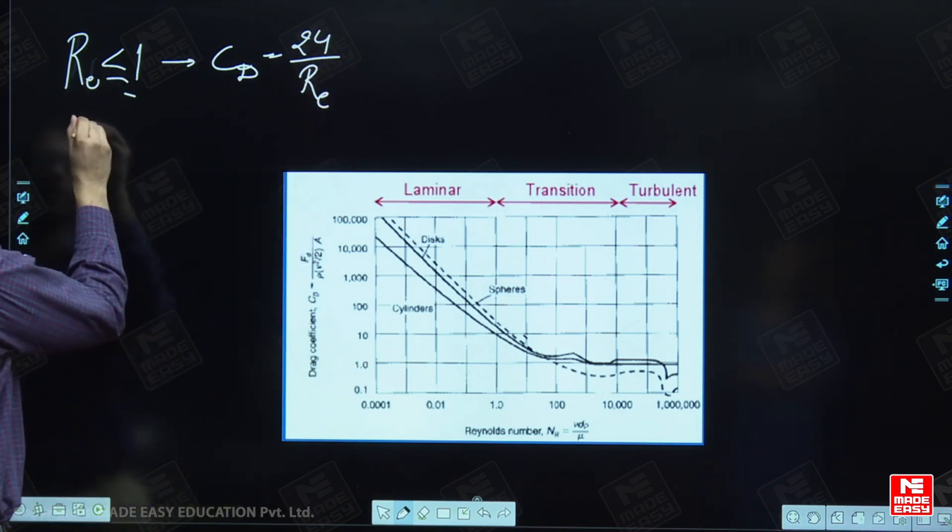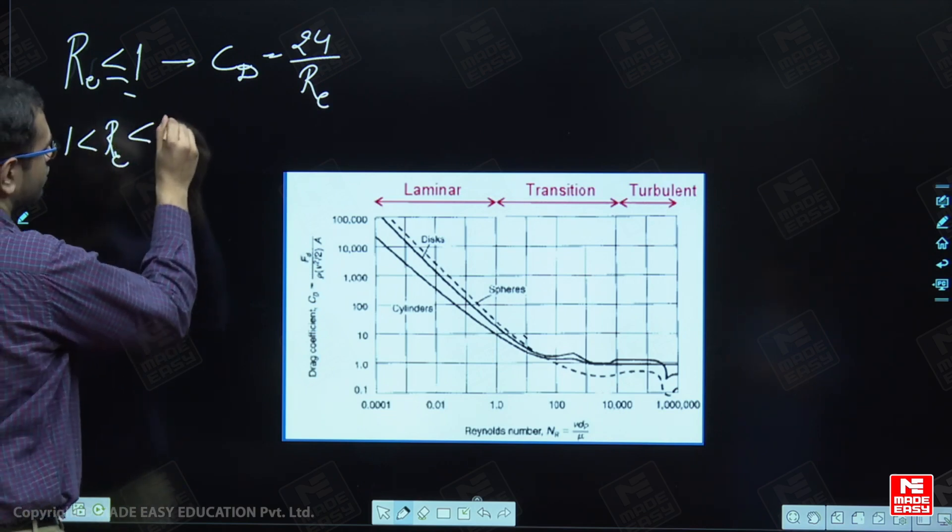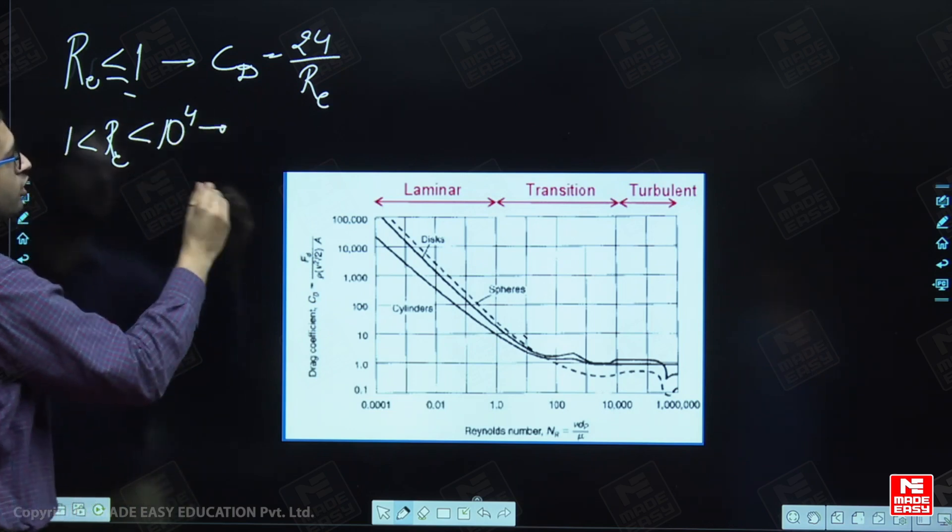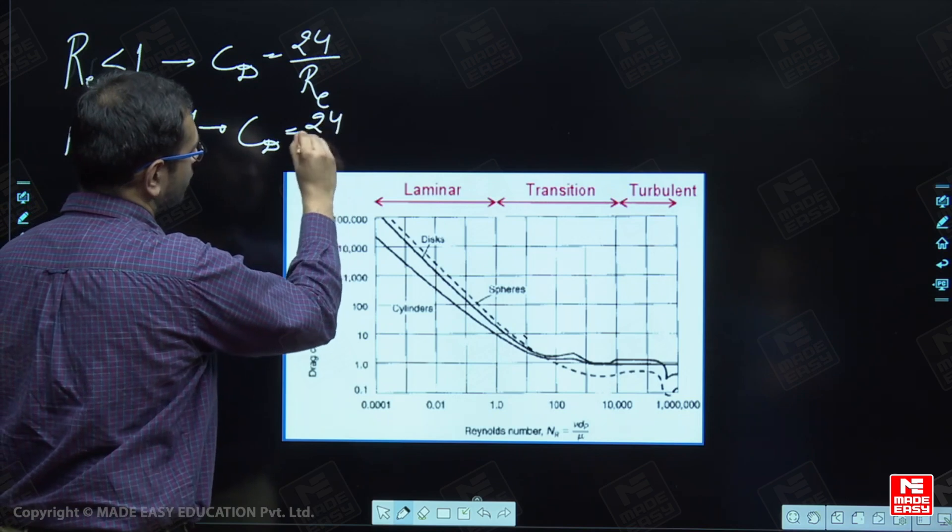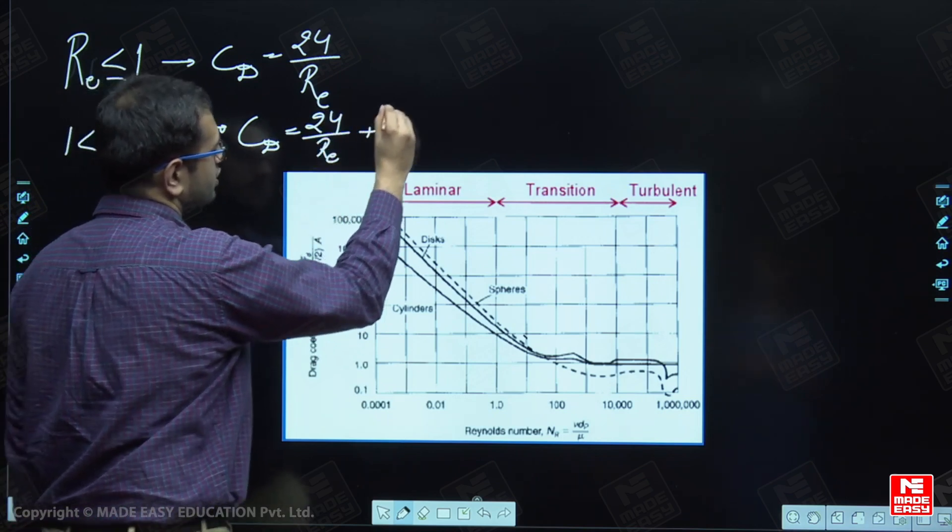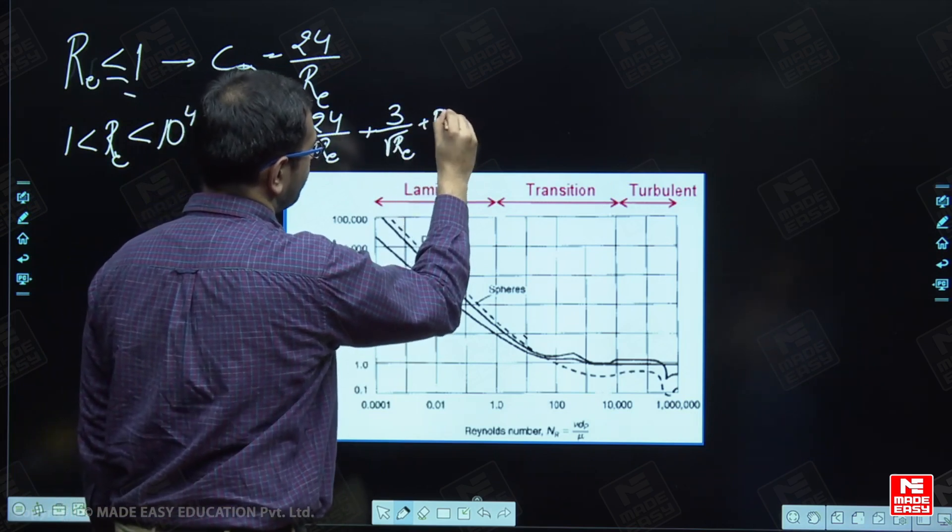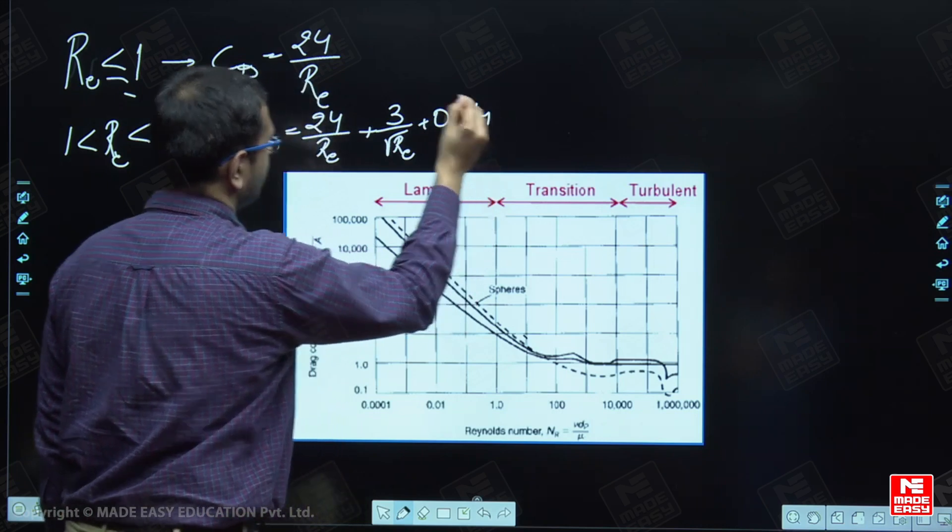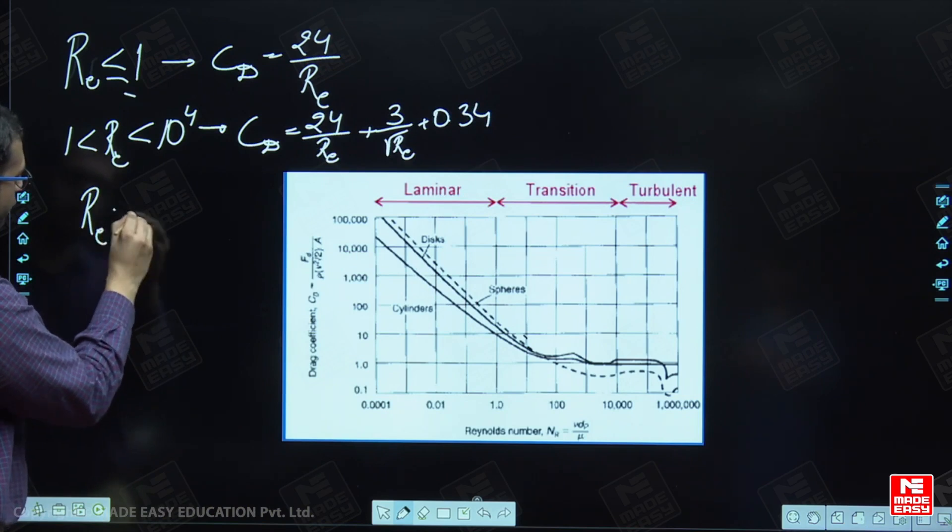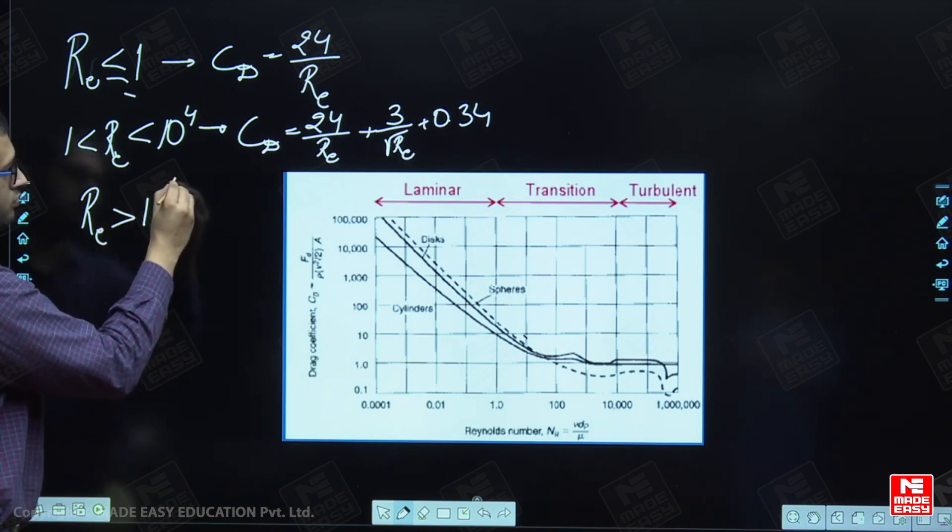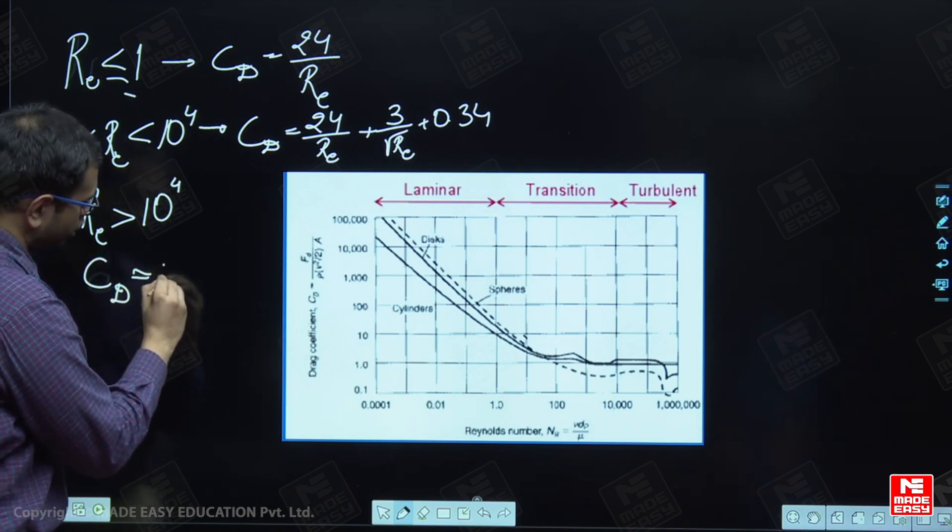And when our Reynolds number lies in the range of 1 to 10 to the power 4, then the flow is termed as transition flow, and the coefficient of drag is written as 24 upon r e plus 3 upon root r e plus 0.34. And when the flow is turbulent, that is our Reynolds number is greater than 10 to the power 4, then the coefficient of drag is approximately equal to 0.4.